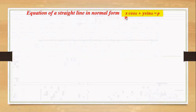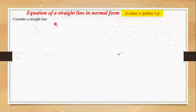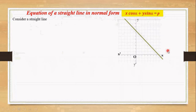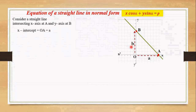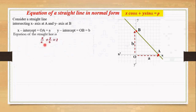Now let's derive the equation of the straight line in normal form: x cos alpha plus y sin alpha equals to p. For that, let's consider a coordinate axis and a straight line that intersects the x-axis at A and the y-axis at B. Here the x-intercept is OA denoted by small a and the y-intercept is OB denoted by small b. We know the equation of a straight line in double intercept form is x by a plus y by b equals to 1. Let's number this as equation number one.